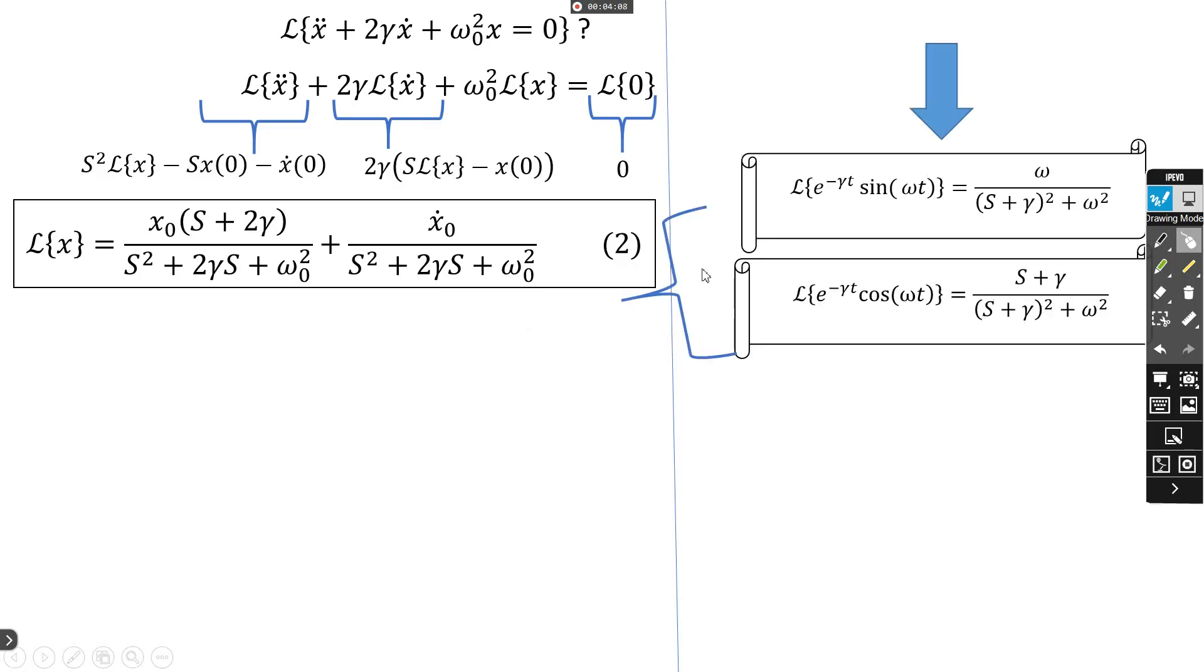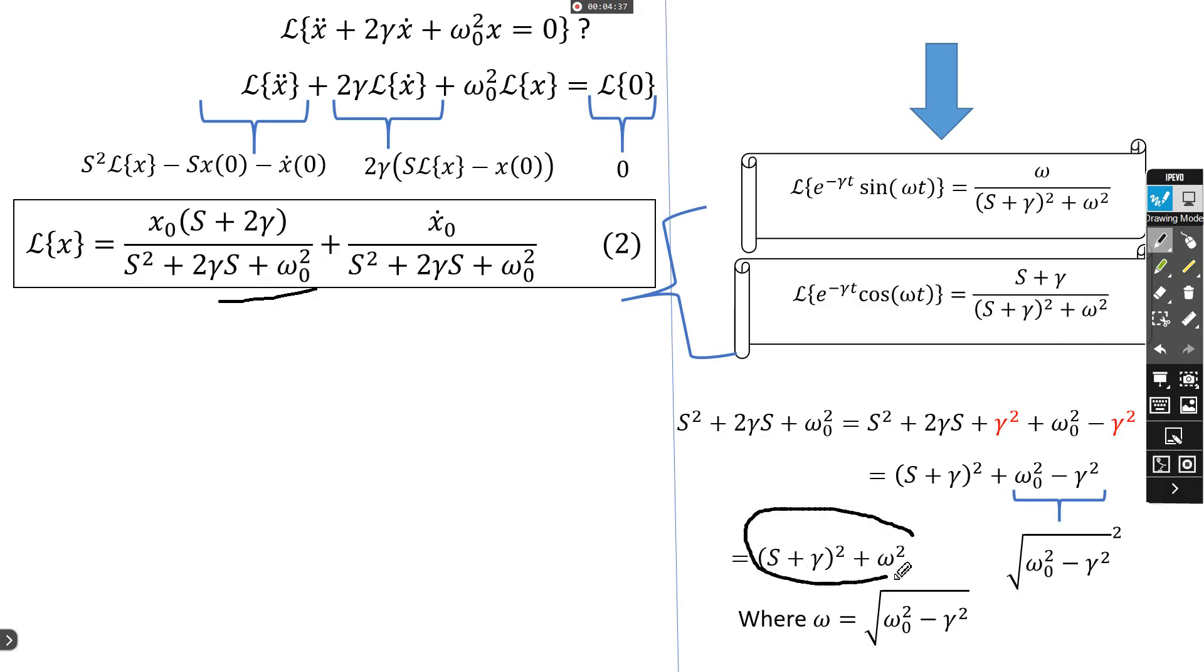Before continuing, we need these results for Laplace transform of cosine and sine. Before using them in expression 2, we need to transform this polynomial function s² + 2γs + ω₀² to this expression.